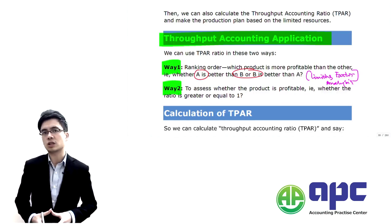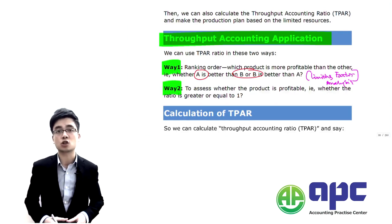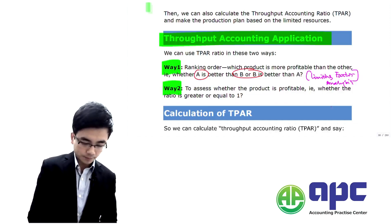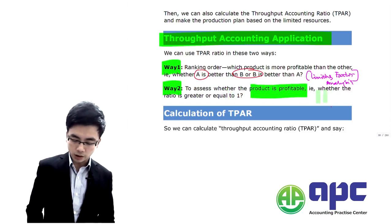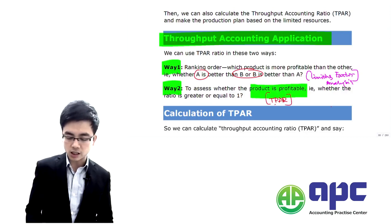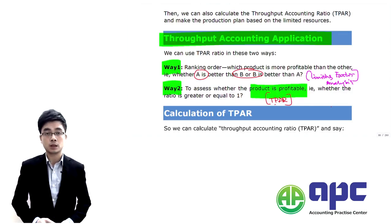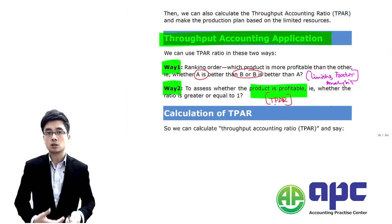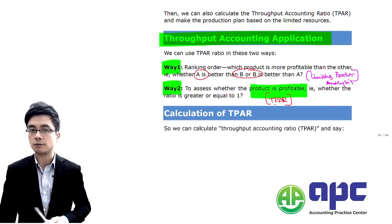We're going to decide which product to make first given those bottlenecks in each department. When producing, for example, product one, it has to go through departments one, two, and three — that's why we need to take the bottleneck into account. Secondly, we assess whether the product is profitable by calculating the throughput accounting ratio, or TPAR. If it's greater than one: profitable. Less than one: not very profitable. Equals one: break-even. If less than one, we think about how to improve profitability by considering those bottleneck resources in the factory chain.